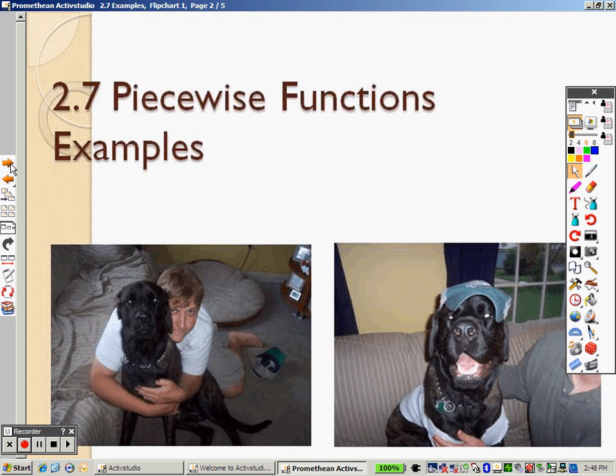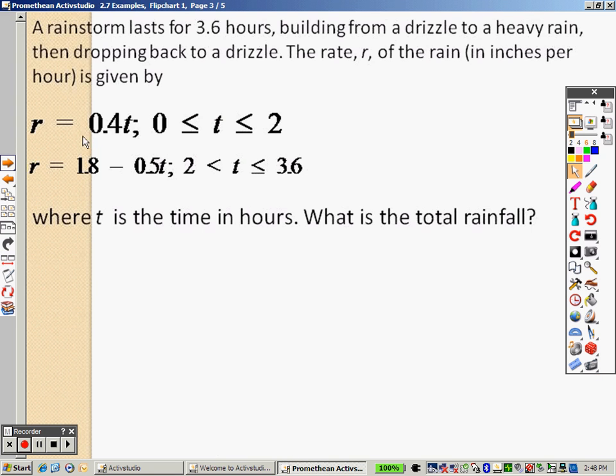Okay, 2.7. 2.7 is a piecewise function. So we're going to take a look here at a word problem so you can understand how to type this stuff in to use it. It says a rainstorm lasts for 3.6 hours, building from a drizzle to a heavy rain and then back to drizzle again.